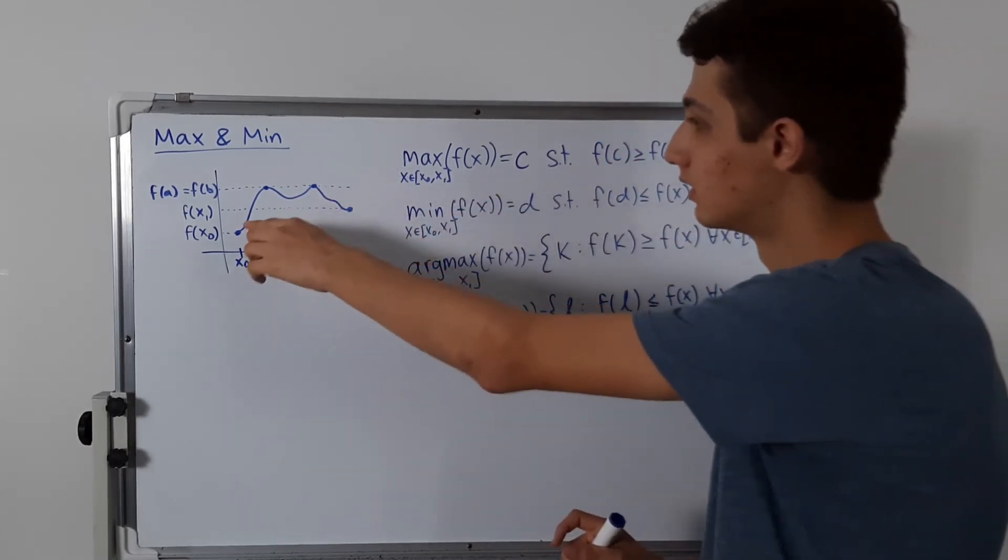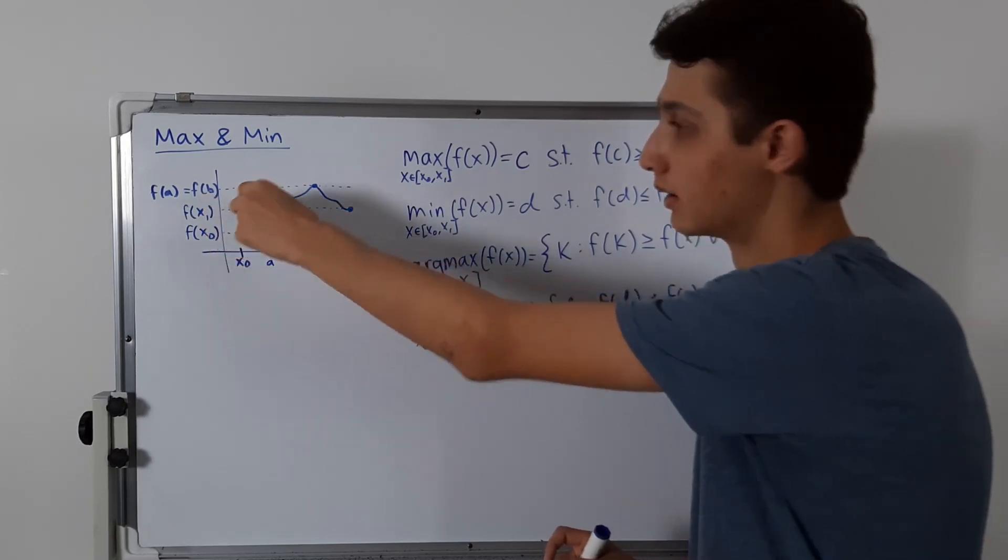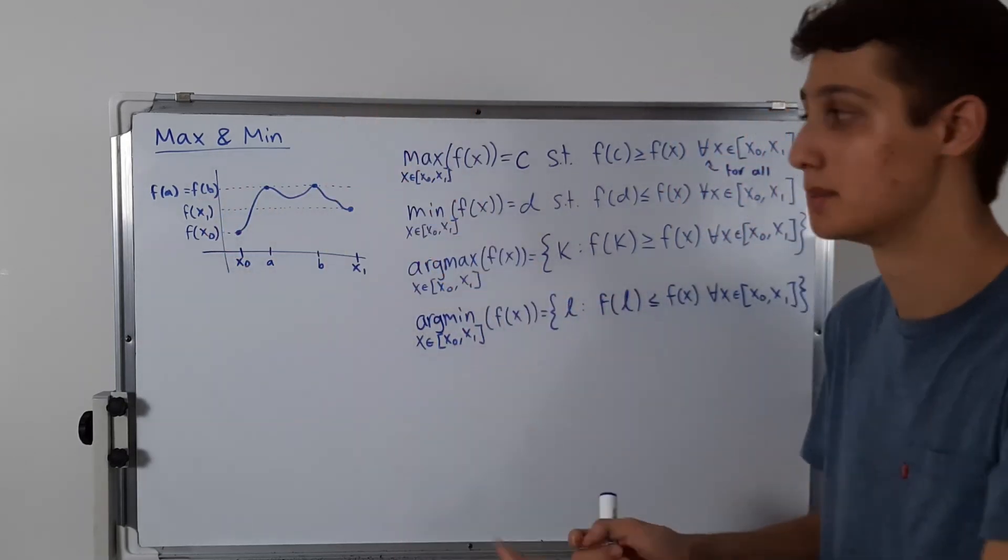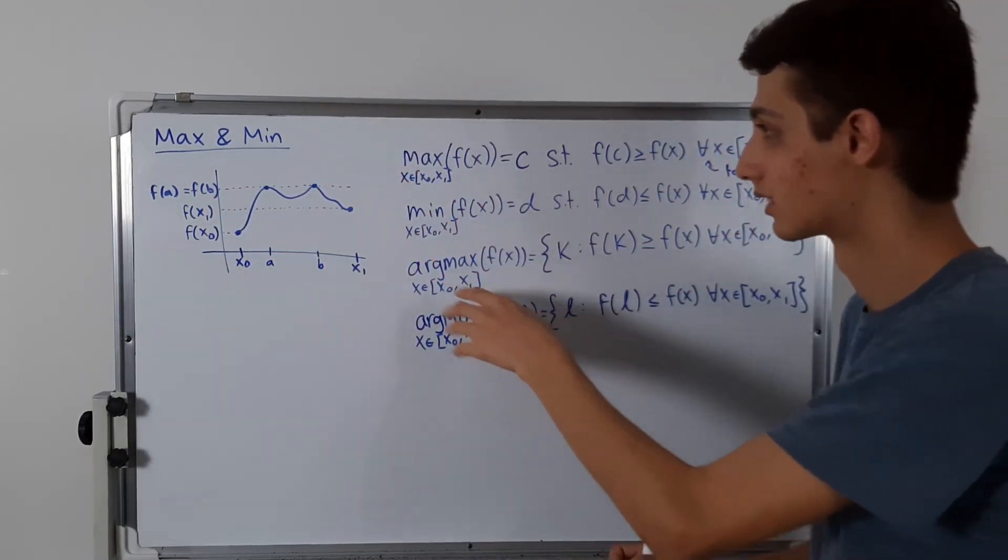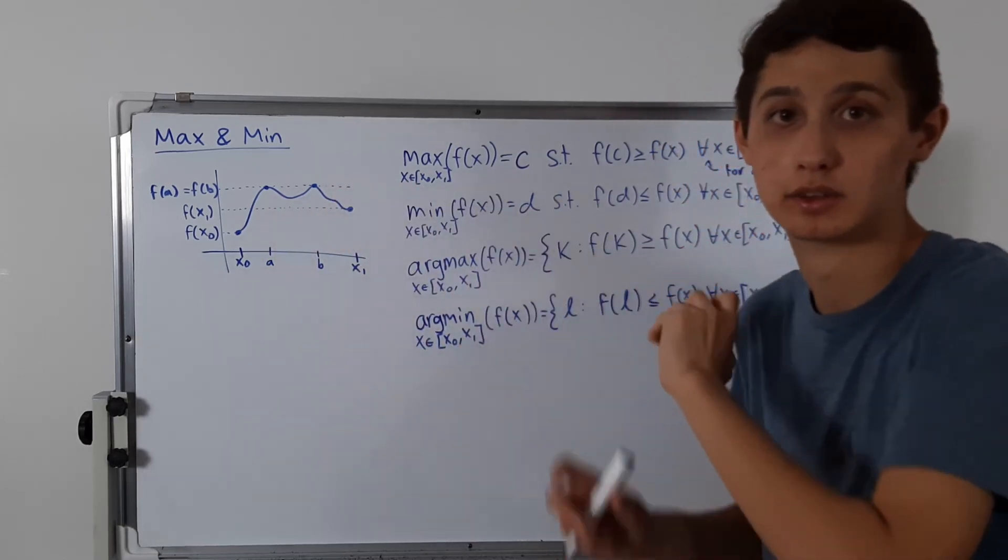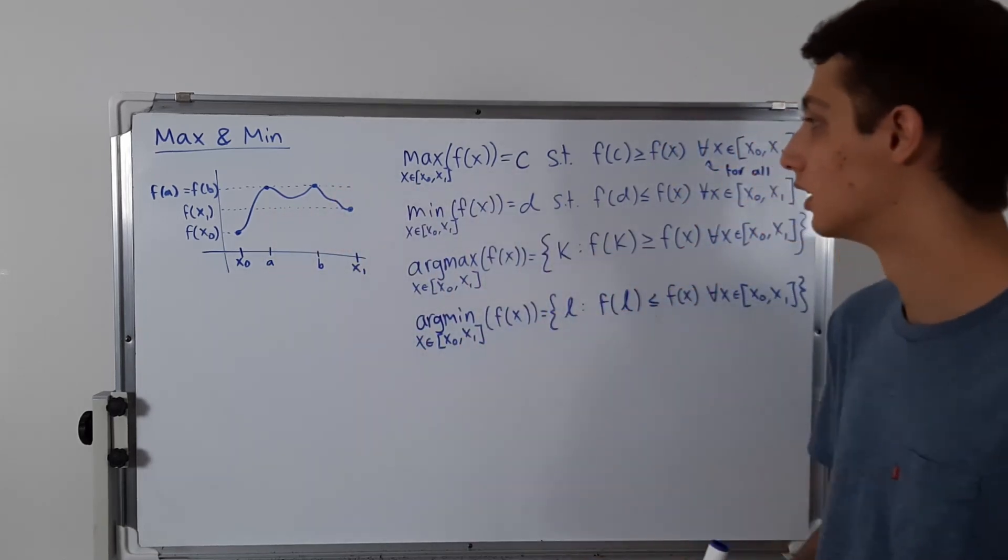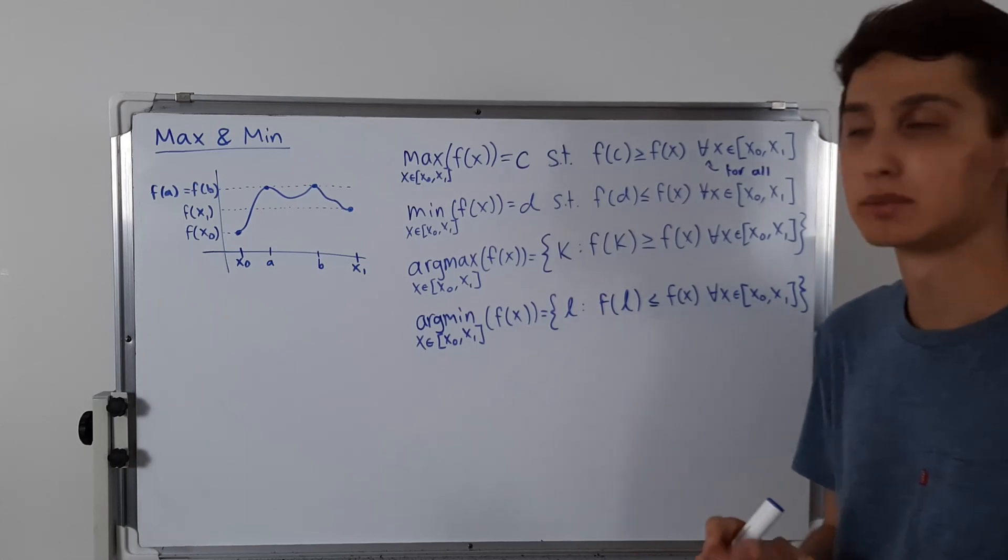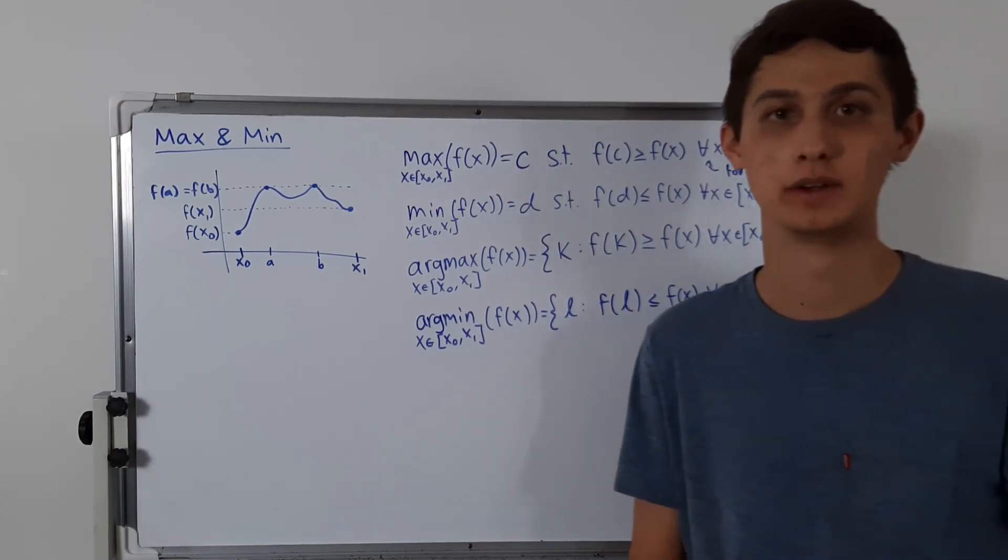The maximum is f of a or f of b, they're the same, so it doesn't matter, and the argmax is a and b, so both of them in that set. So, basically, that's it. So that's some pretty easy analysis for you guys.